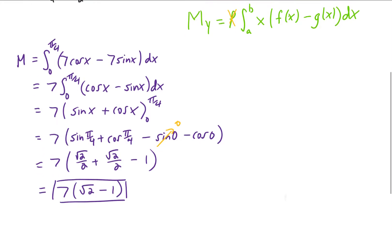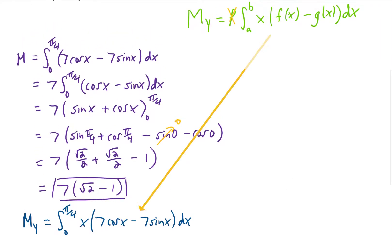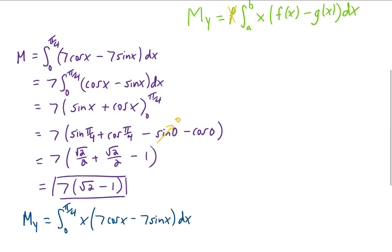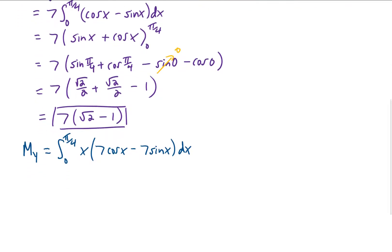Okay, I think that next up is going to be m sub y. Plugging f of x and g of x into that formula gives us the following integral. I'm going to take a factor of 7 out of it, and I'm also going to distribute the x through the parentheses. What we have here are two integrals that require integration by parts. This is a technique that I'm actually going to talk about in the next set of videos.